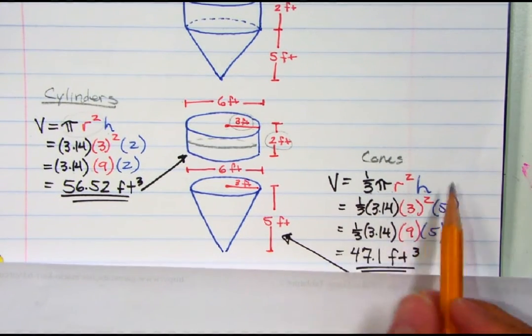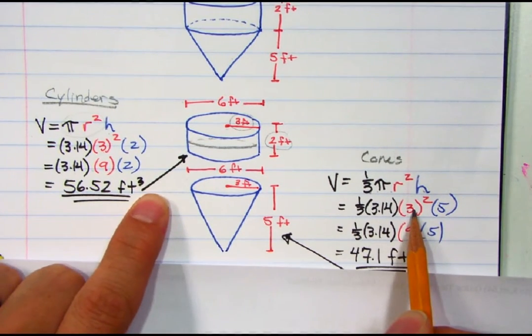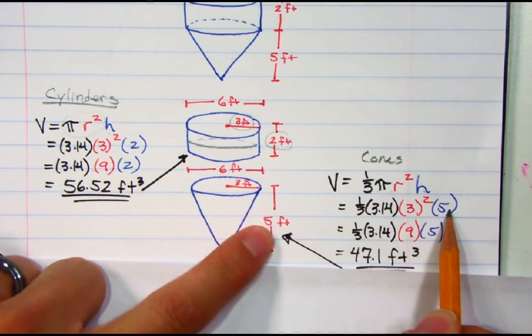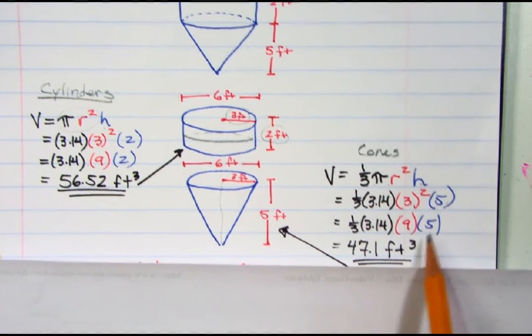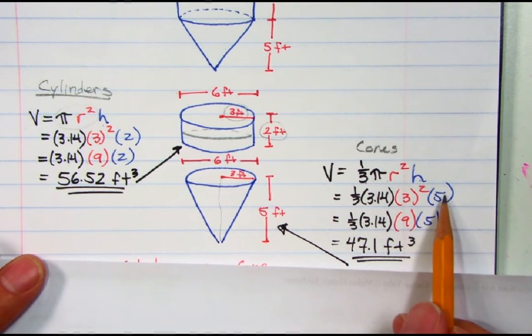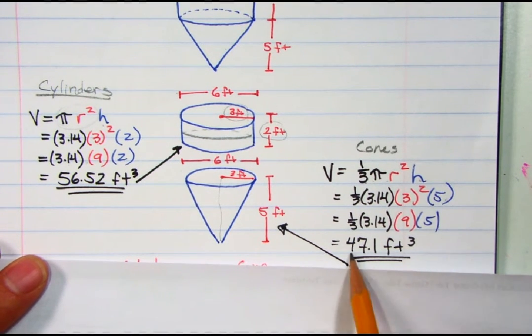I'm going to do the same basic information, except this time the height is not 2, it's 5. The height is 5, that's from the center all the way to the top, and I just multiply. I get 47.1.